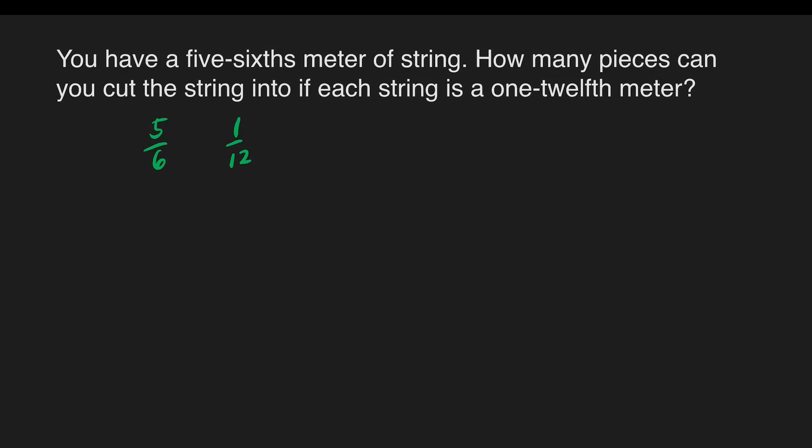So we have 5/6 as our dividend and 1/12 as our divisor. Why do we need to identify which one is dividend and which one is divisor? Because it is important — later we have to follow the steps wherein we need to get the reciprocal of our divisor. Reciprocals.